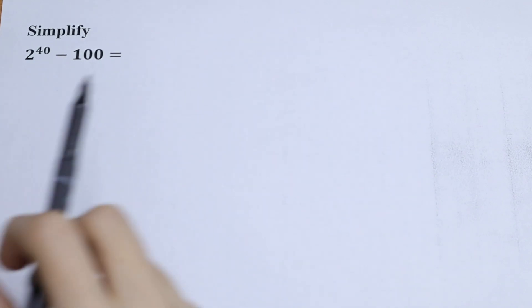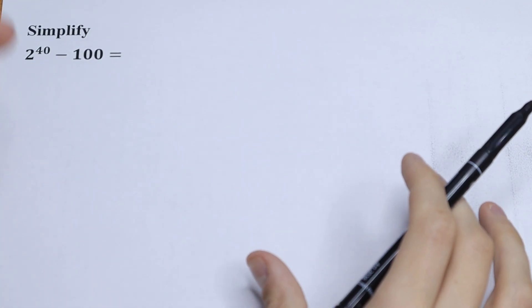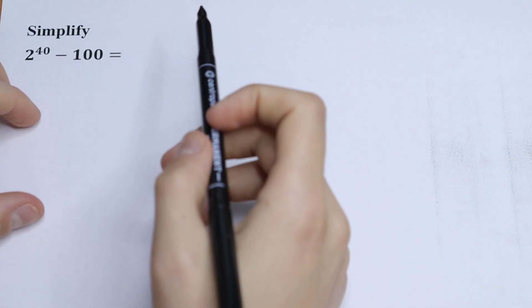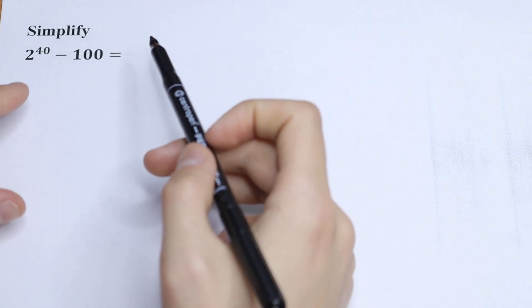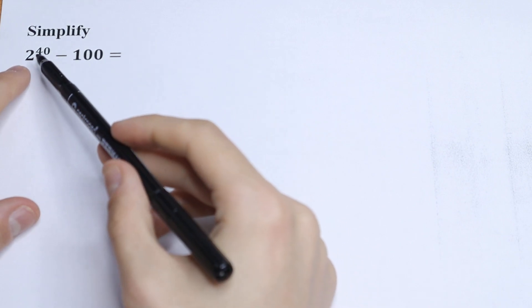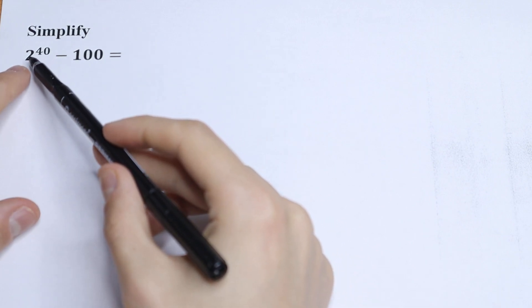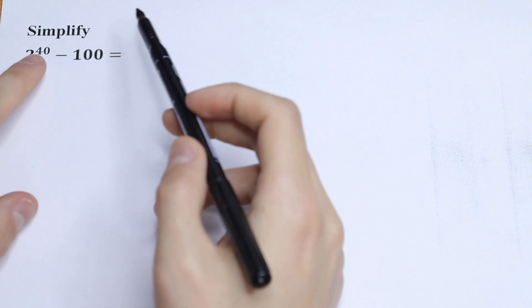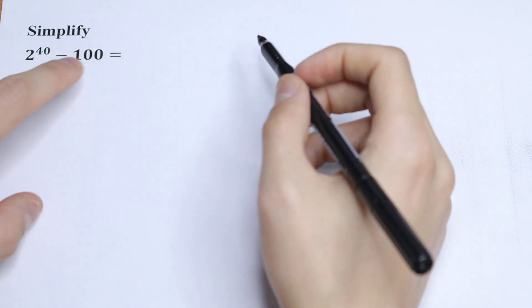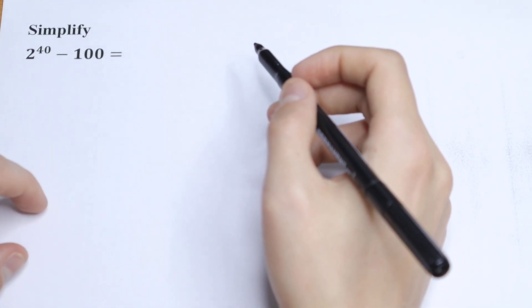Hello everyone, welcome back to MathMove. Today we have an interesting algebra problem. We need to simplify and find our answer: 2 to the 40th power minus 100.